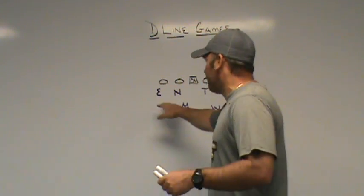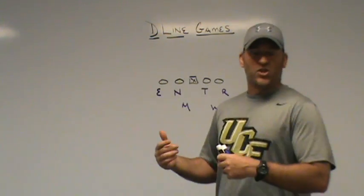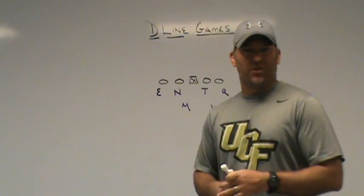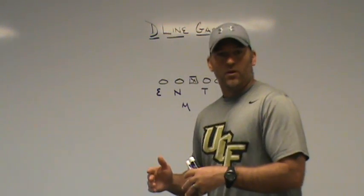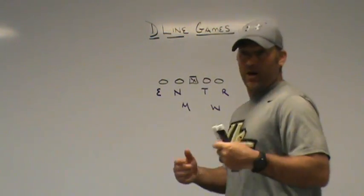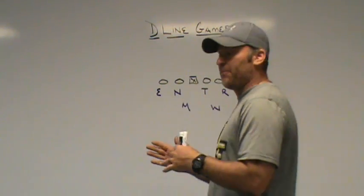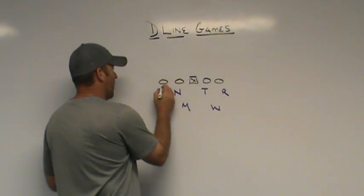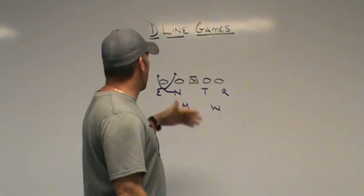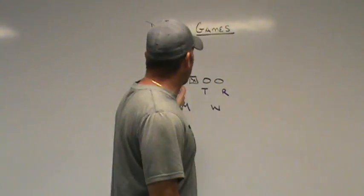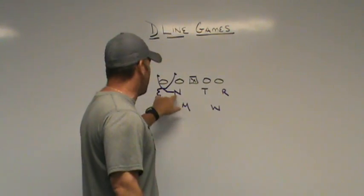The first one is on the strong side — what people like to call you-me games between the 3 and the 5 technique. The you-me game tells them which one goes first in an exchange game. From the defensive end's vantage point, a me-game means the defensive end is going first. It's a simple gap exchange between the 3 and the 5 where we take the 5 and bring them under first, then take the 3 and bring them outside behind that. When we run this game, there's no gap exchange for the Mike linebacker — he has nothing to worry about as far as gap exchanges.